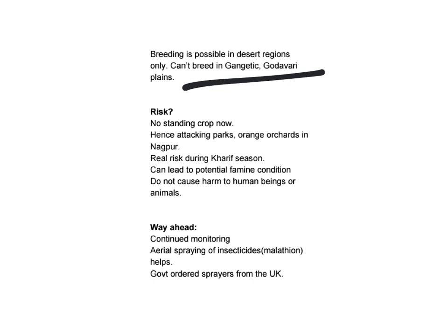What is the risk due to these locusts right now? There is low risk currently because there is no standing crop — the Rabi crop has already been harvested. Hence these locusts are now attacking parks or orange orchards in Nagpur district of Maharashtra. However, the real risk would come during the Kharif season, whose sowing will start in June, and this can lead to potential famine conditions if the locusts consume all the Kharif crop. In general, they do not cause any harm to human beings or animals.